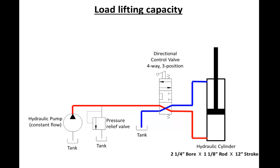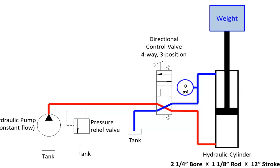If this hydraulic cylinder were required to lift a weight, it is very important to notice that the pressure in the line leaving the hydraulic cylinder has nothing to do with the amount of weight being lifted. Pressure depends solely on downstream restrictions in the system. If fluid is free to flow through this pipe, then no pressure would build up in this line. In the red line, however, pressure would have to build in order to overcome the load.